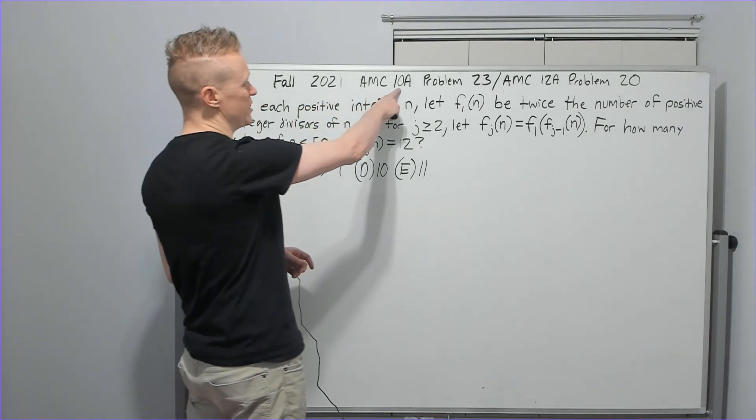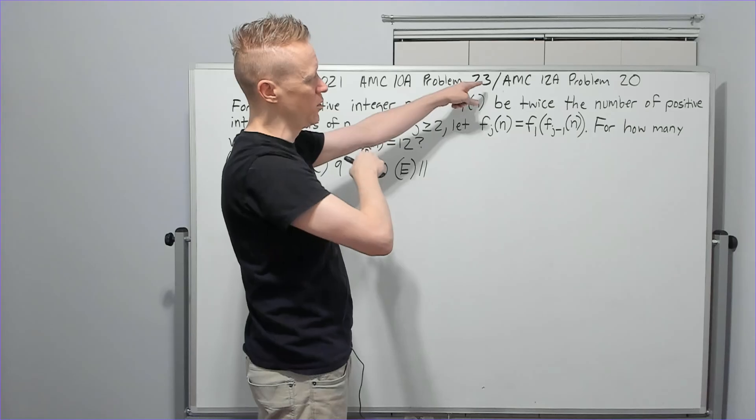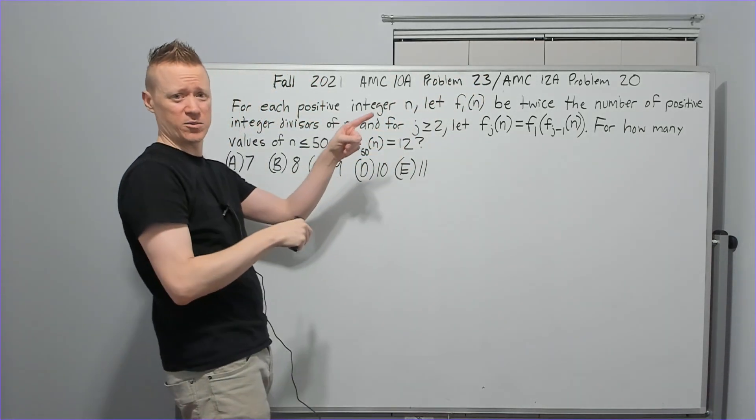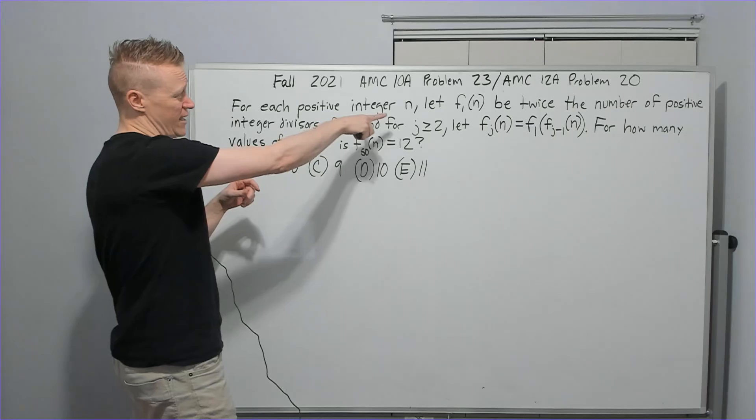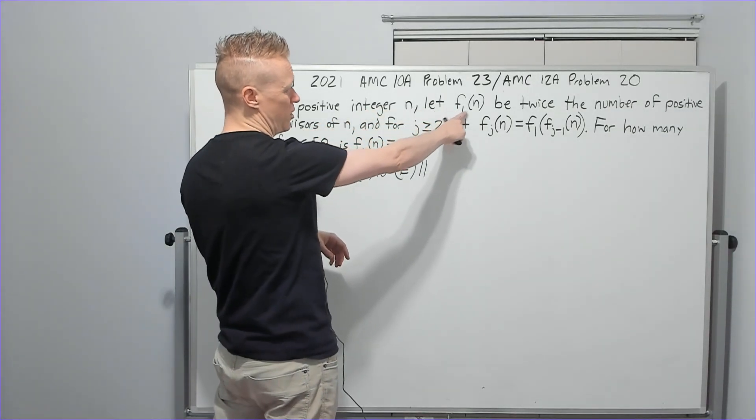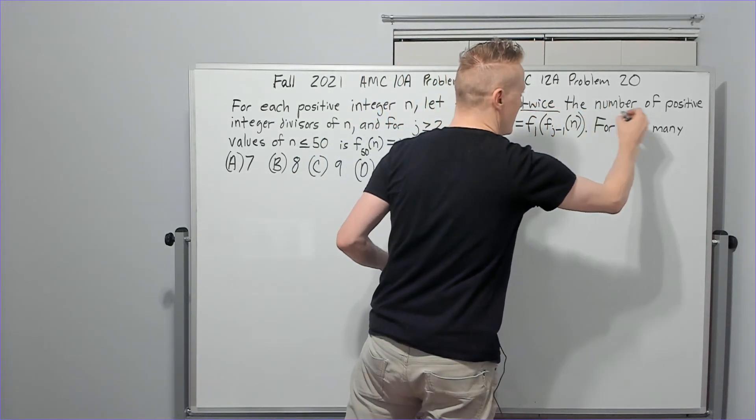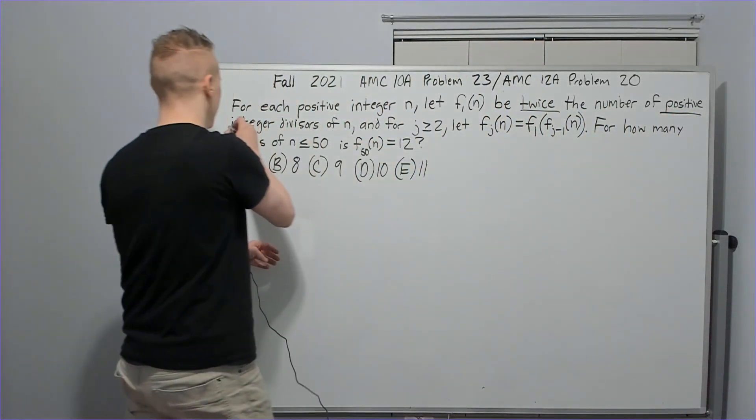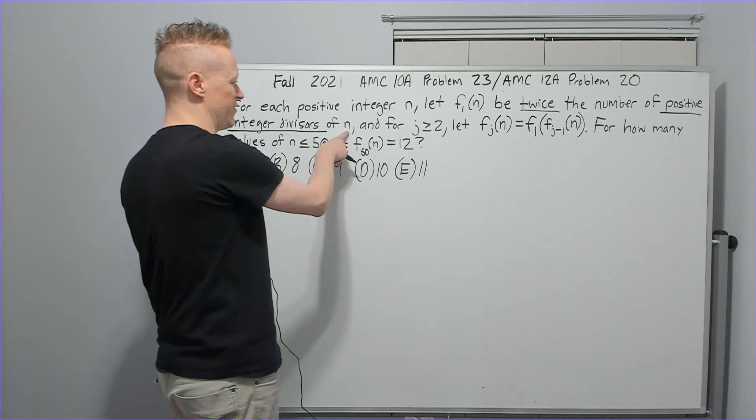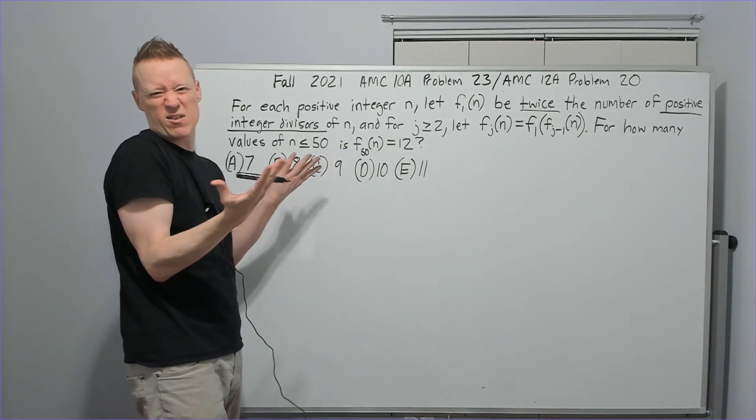This is the fall 2021 AMC 10A. It was problem 23. It was also the 12A, problem 20. All right, for each positive integer n, let f sub 1 of n be twice the number of positive integer divisors of n. Okay, that's okay. We can handle that.